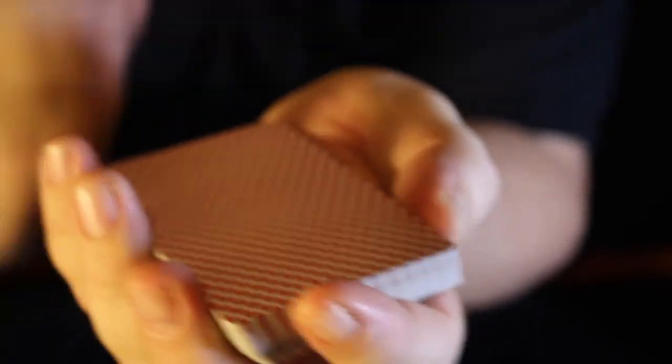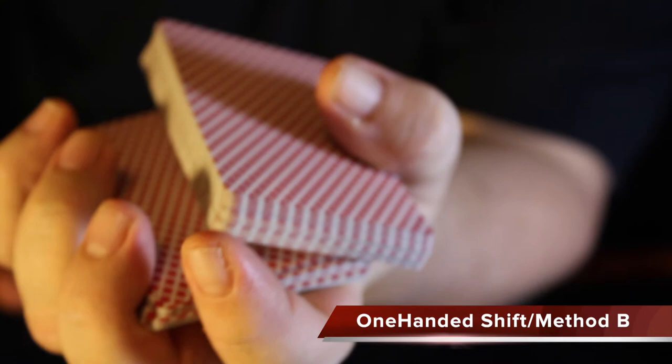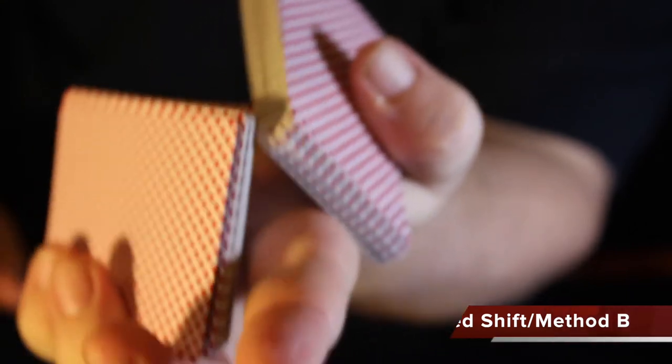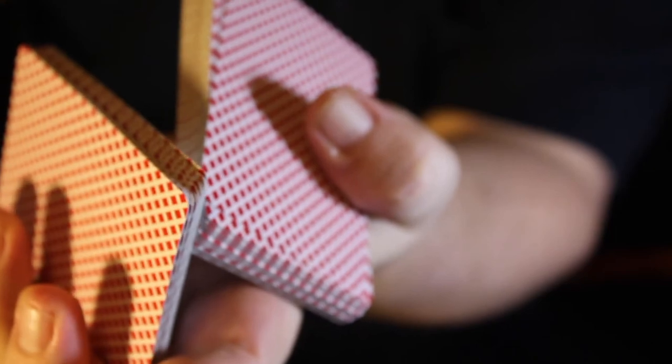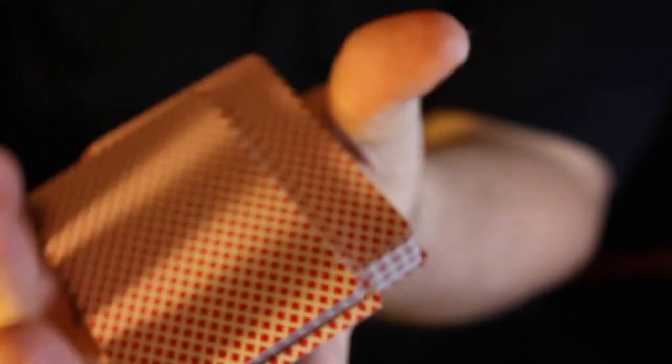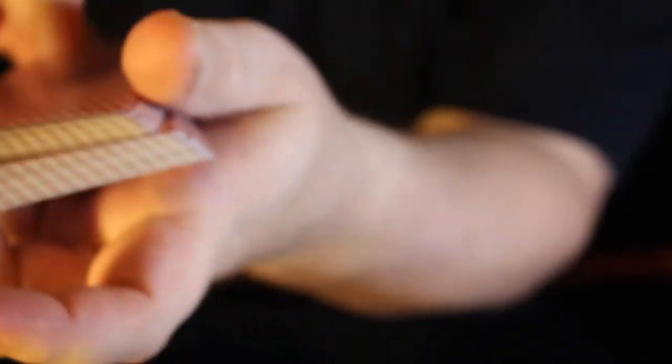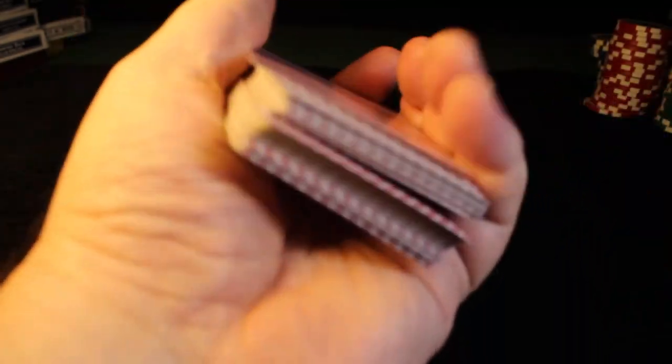Now there is a second way to do the pass. Instead of using your pinky, you're just letting that hand drop, kind of like a Herman pass, and then letting that packet fall behind you. Again, you can start with it already separated. It's a great way to just get used to the motion.